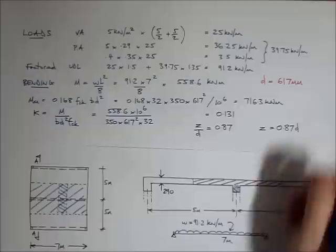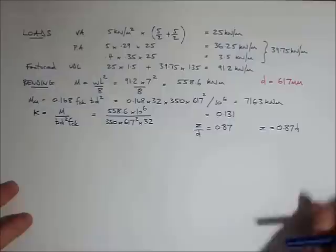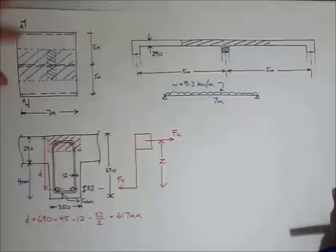So that tells me that z, which is what I'm after, is 0.87 times d. And we know d. We worked it out. So that's great. Now we know what z is, we can calculate the area of steel for the section.